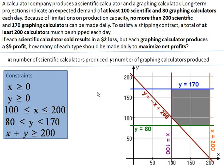The last thing we've come up with here is our objective function, and that's what we're trying to maximize. We're trying to maximize profit, so our objective function has to do with profit. You notice that there's a $2 loss for each scientific calculator, and then a $5 gain for each graphing calculator.